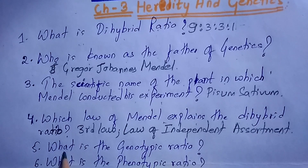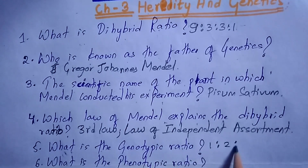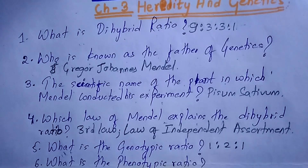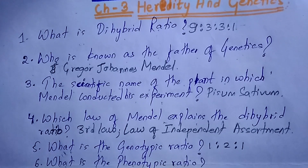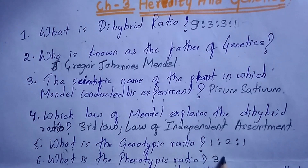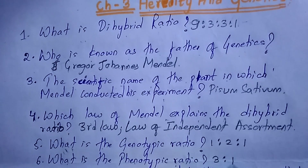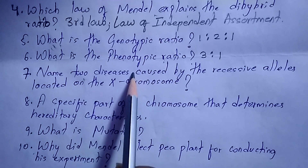Next question: what is the genotypic ratio? It is 1:2:1. Next question: what is the phenotypic ratio? It is 3:1.